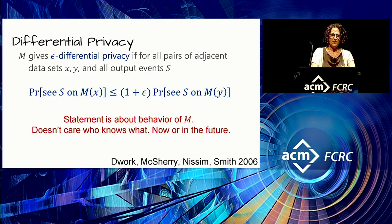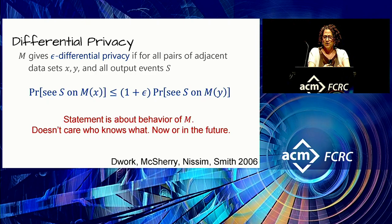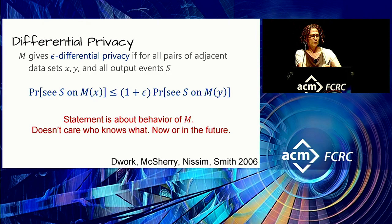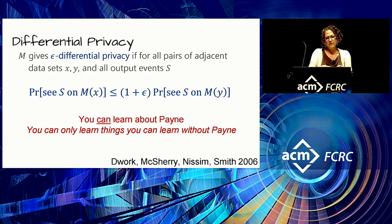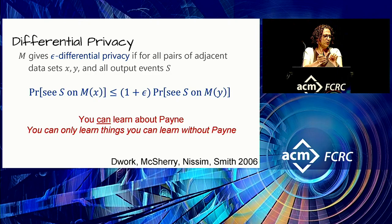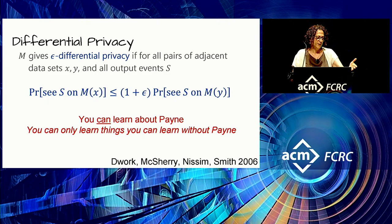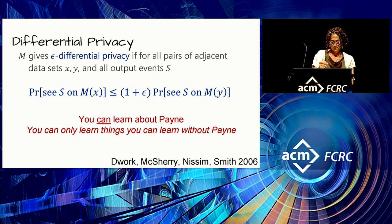Notice that this is a statement about the behavior of algorithm M. It doesn't care who is observing the output, what that observer happens to know, how much computational power is available now or in the future — so it's future-proof. The definition says you can learn about Payne — you can learn that she very likely had one left foot and one right foot. But you can only learn things you couldn't learn without Payne.